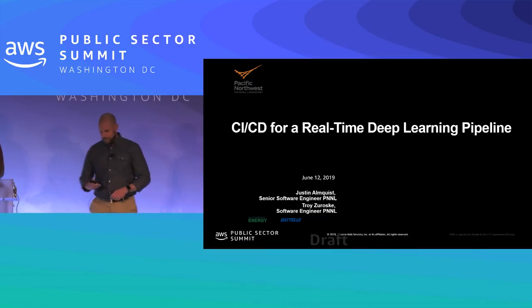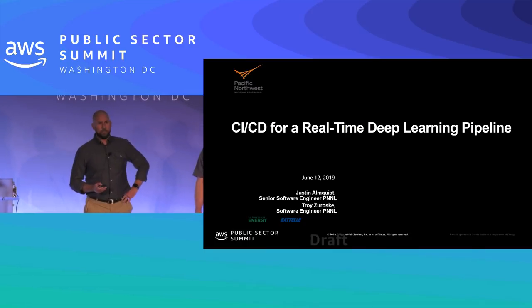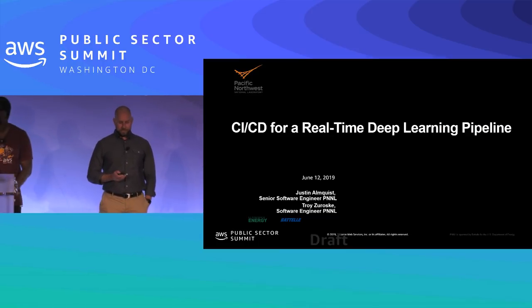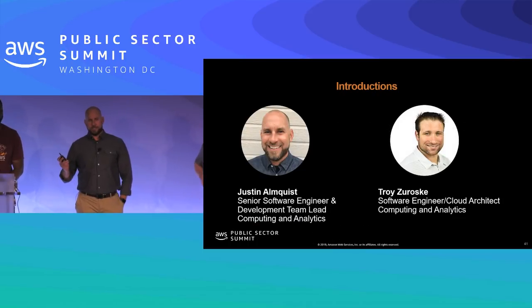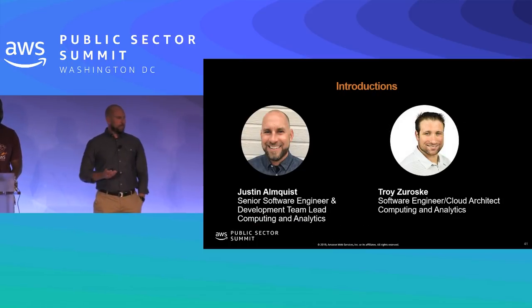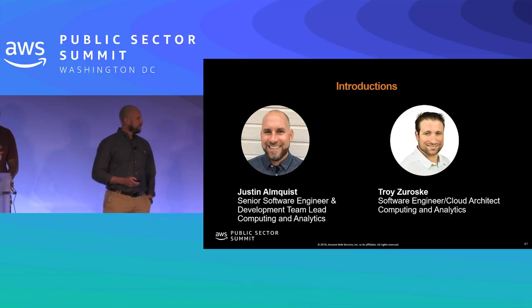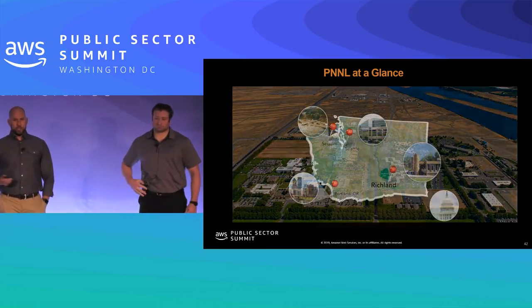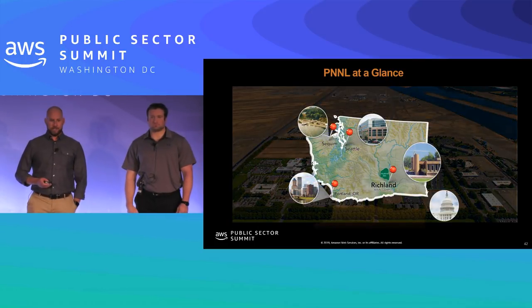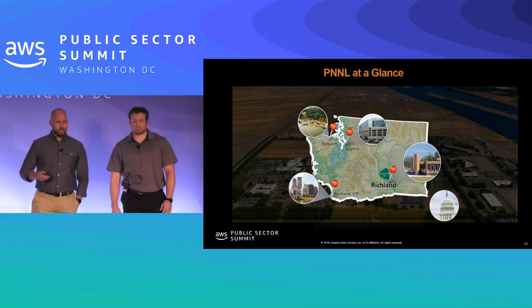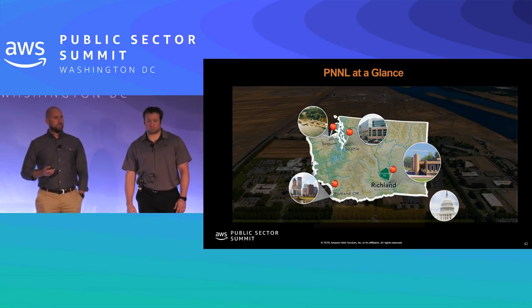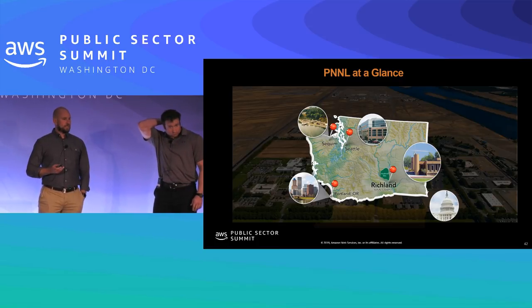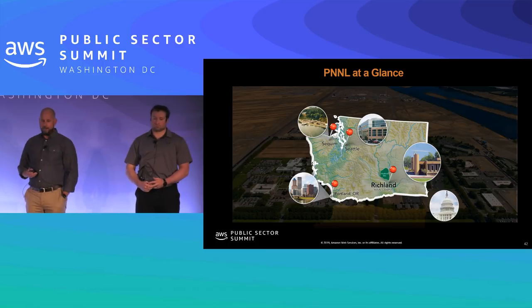Now Justin and Troy will talk about their platform. I'm Justin Almquist from PNNL. I'm Troy, a software engineer and cloud architect at PNNL in the same division. Pacific Northwest National Laboratory is in eastern Washington state — a national lab focused on earth sciences, chemistry, and data analytics.